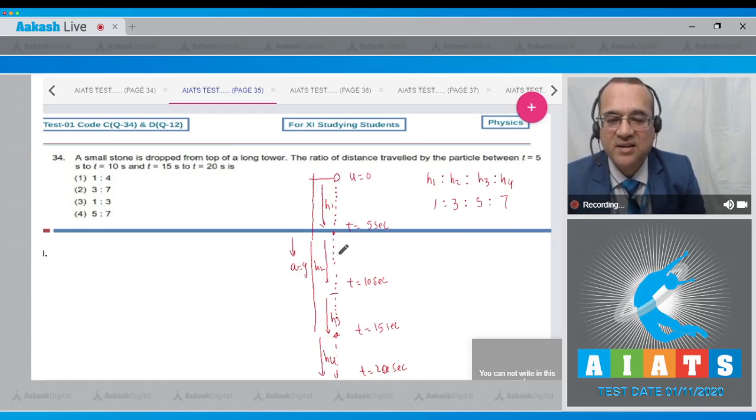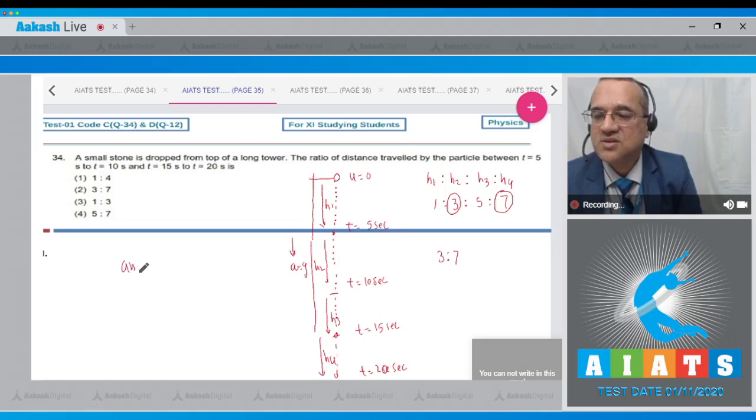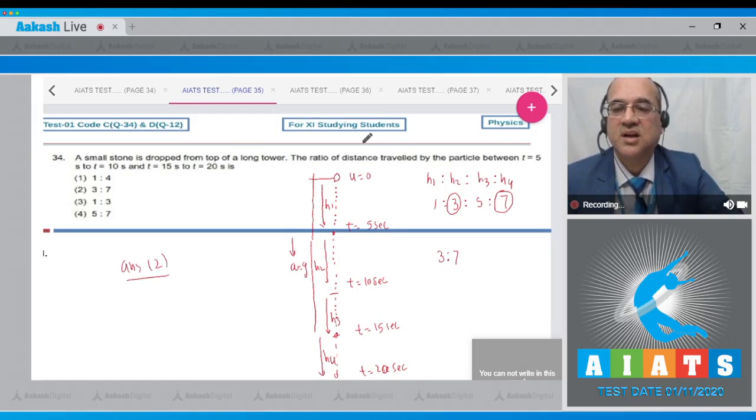And you have to find between 5 and 10, this value, and that is equal to 3, and between 15 to 20, it is 7. So the correct ratio will be equal to 3 as to 7. And the answer to this option is option number 2. So let us move to the next problem.